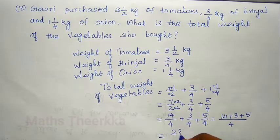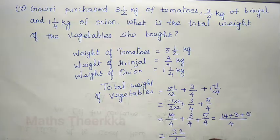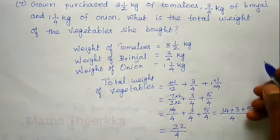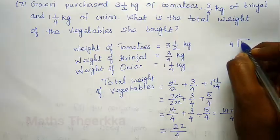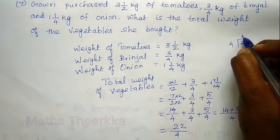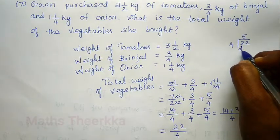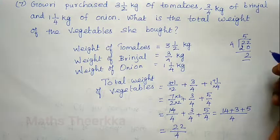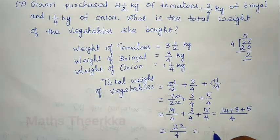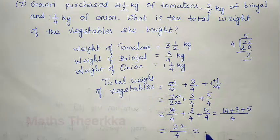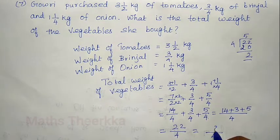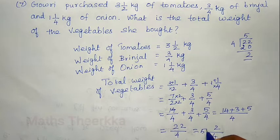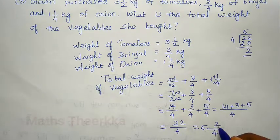14 plus 3 plus 5 equals 22 divided by 4. So 5 fours are 20. 22 minus 20 is 2. We convert to a mixed fraction: divisor 4, remainder 2, quotient 5.